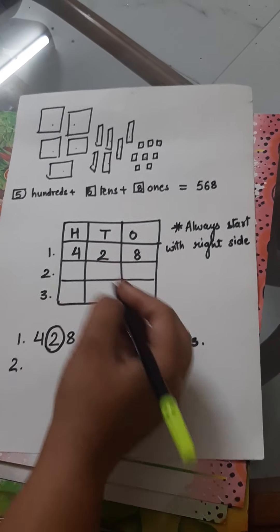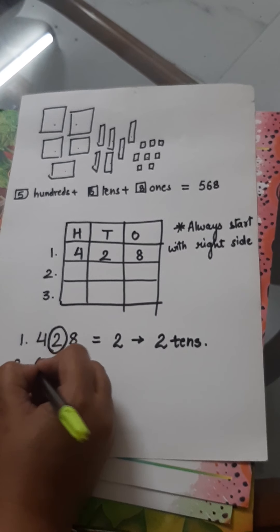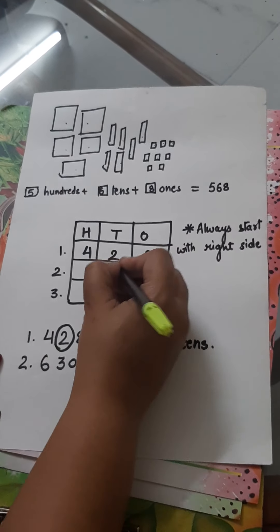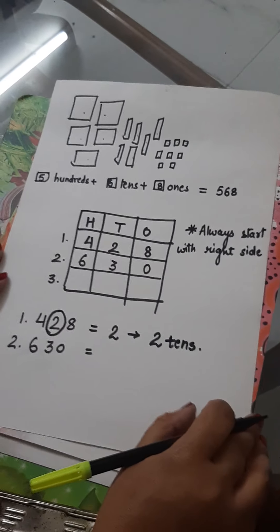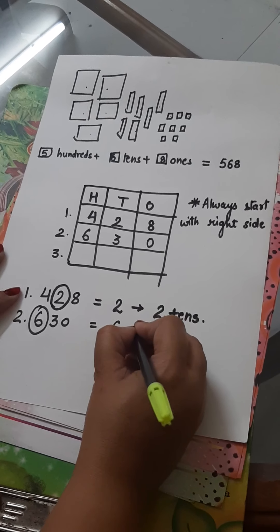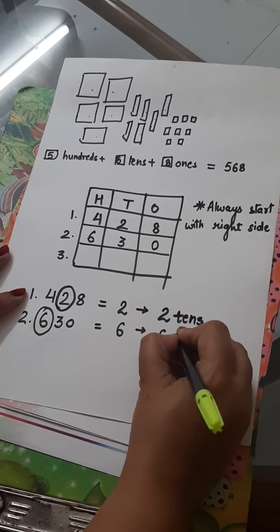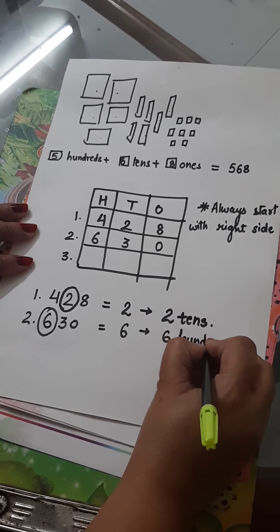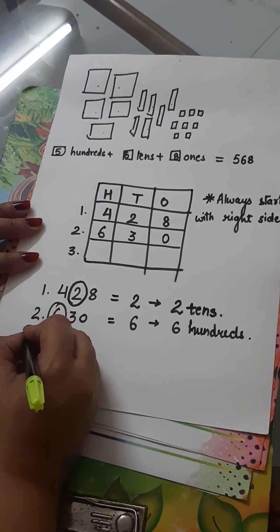Number 2, 630. 0, 3, 6. What is the place value of 6? It is equals to 6 hundreds, because 6 is coming below hundreds.